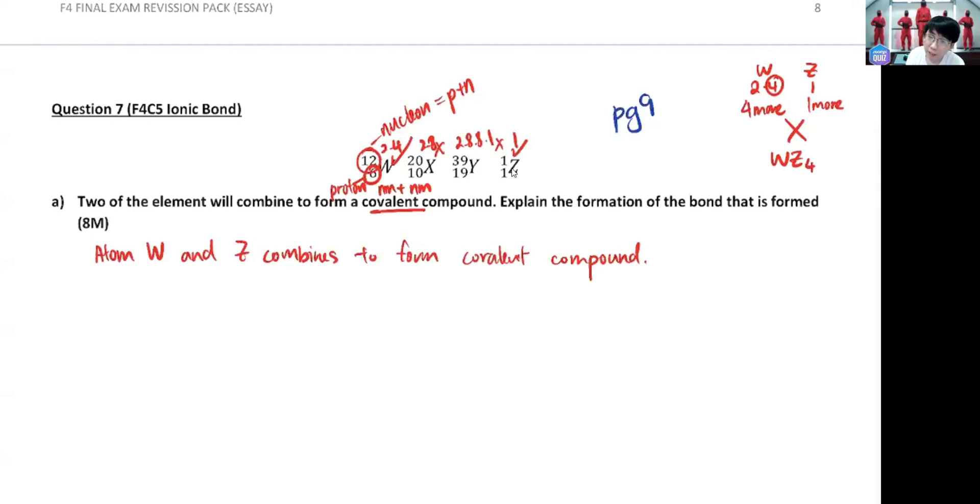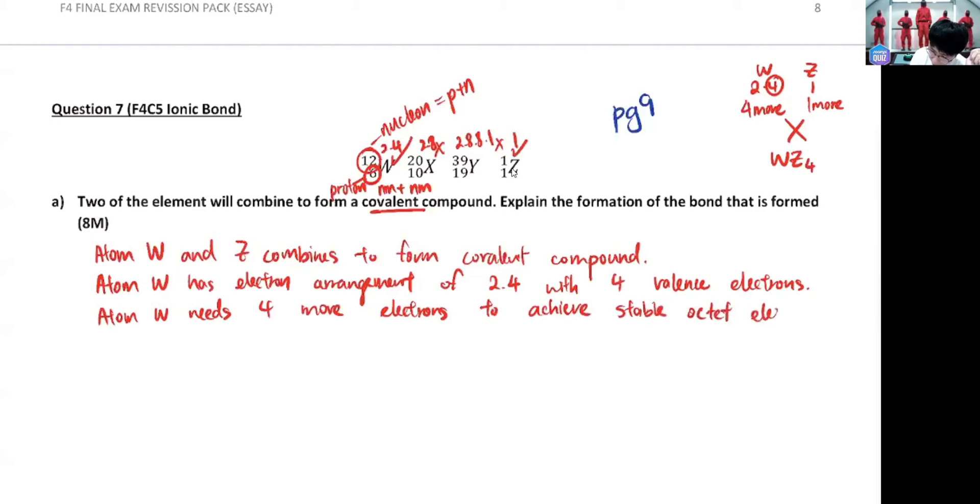So right here we know that atom W has electron arrangement of 2.4 with four valence electrons. So he got four valence electrons. How many more do he need? Four more. So atom W needs four more electrons to achieve stable octet electron arrangement. That's all for W. You're going to get around three marks already, three to four marks I would say.